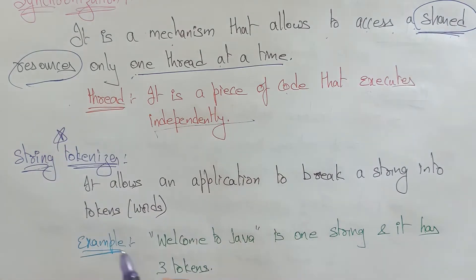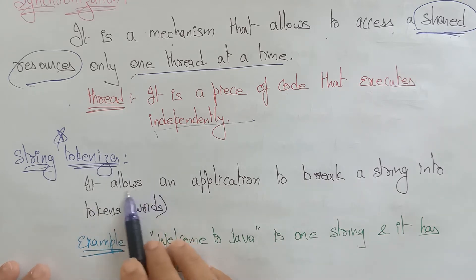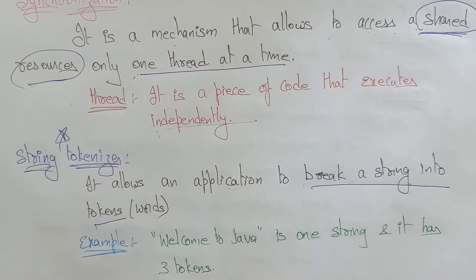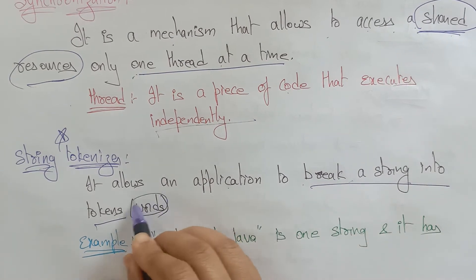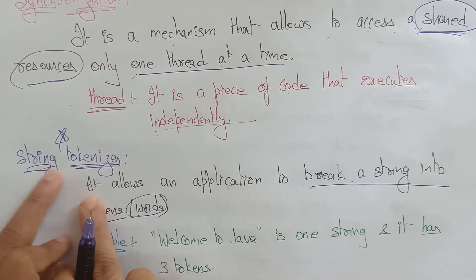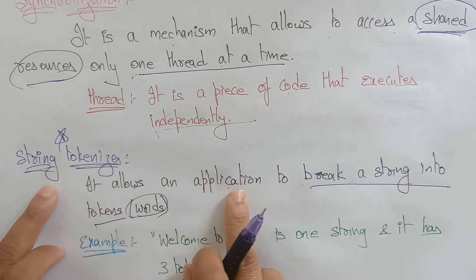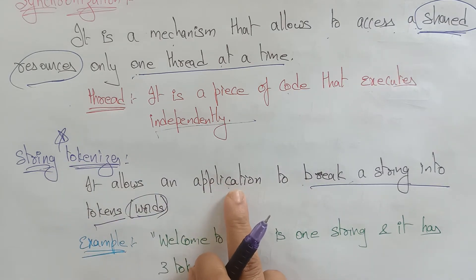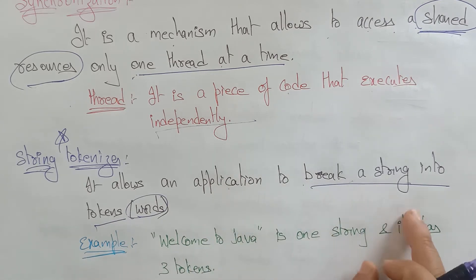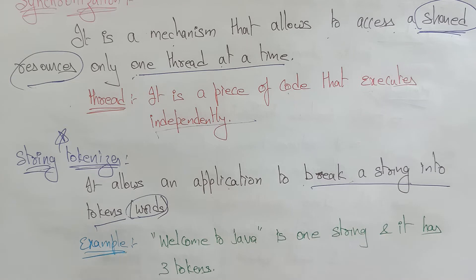Now coming to the String Tokenizer — this is one of the important concepts, so try to understand it, as it will be useful in advanced Java concepts also. String Tokenizer allows an application to break a string into tokens. Tokens are nothing but words.